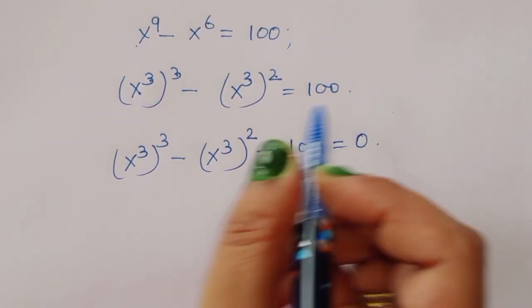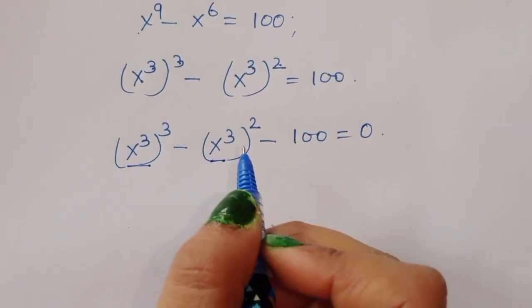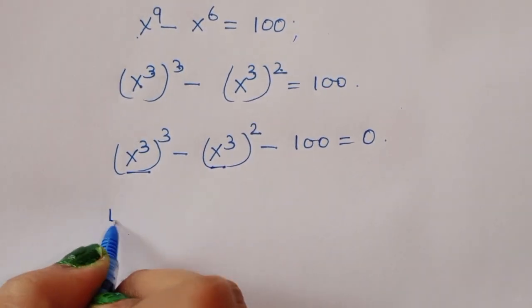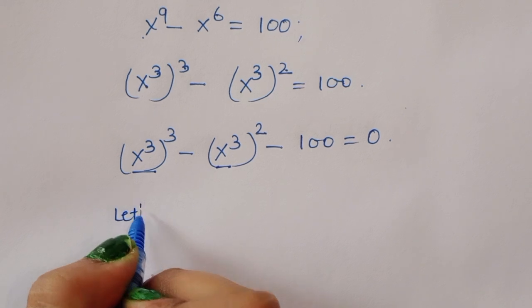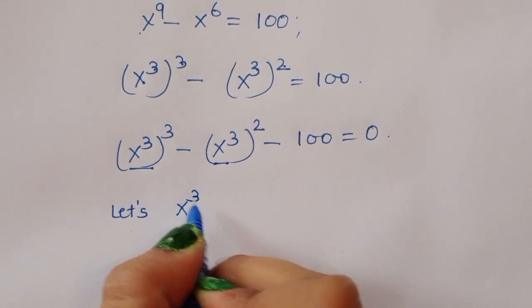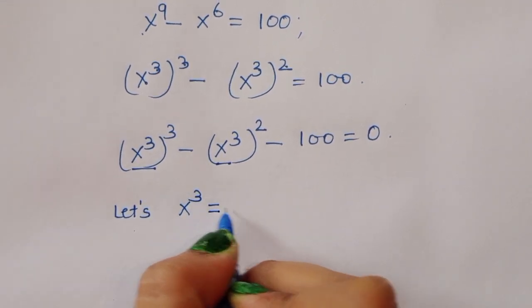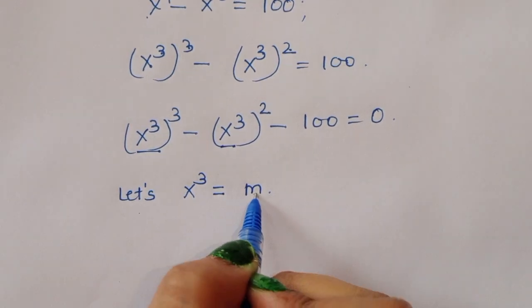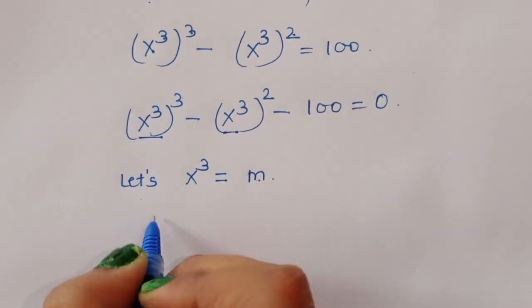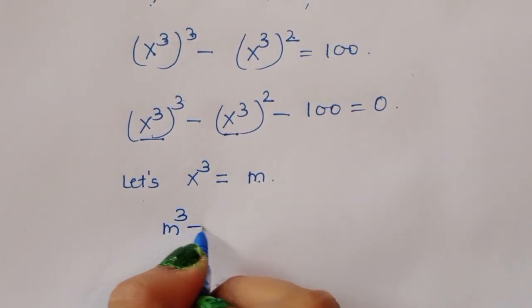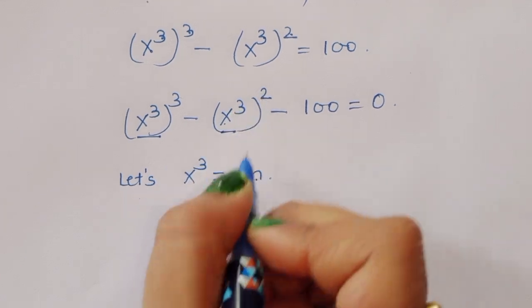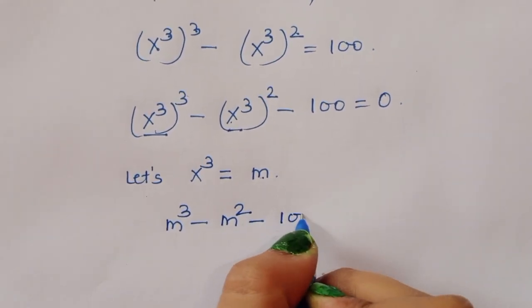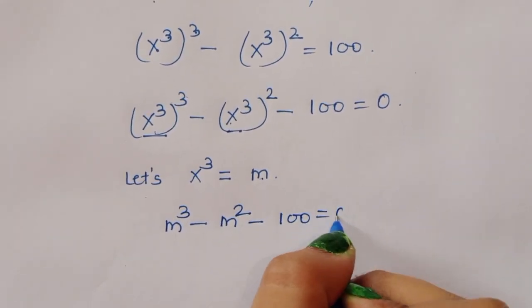We can see x power 3 appearing here and here, so we can make a substitution. Let x power 3 equal m. Then we can write this as m cubed minus m squared minus 100 equals 0.